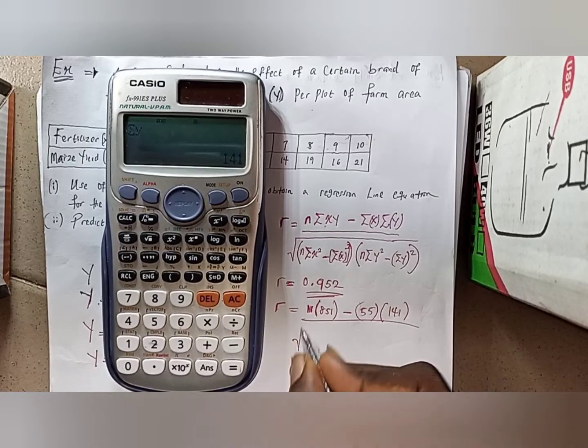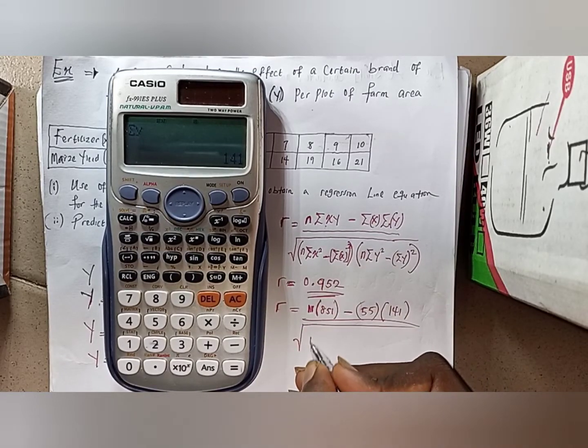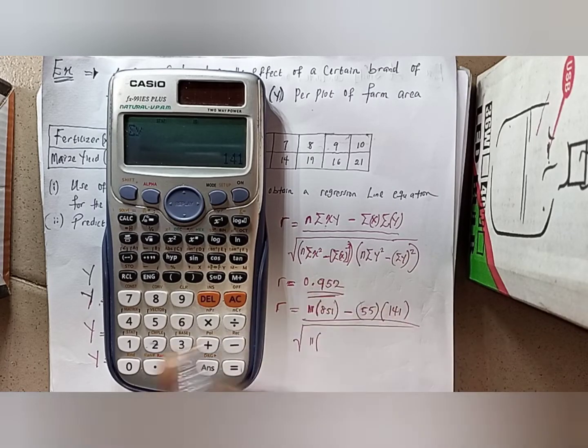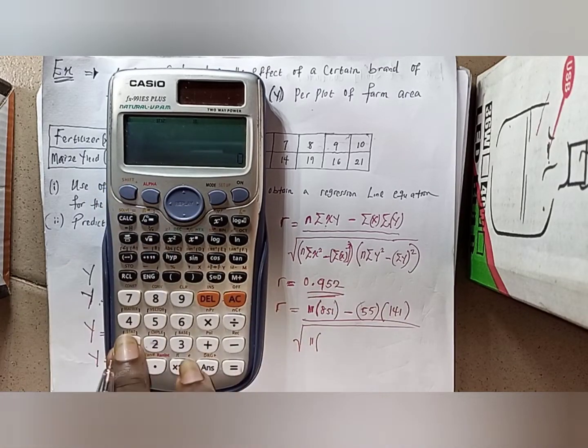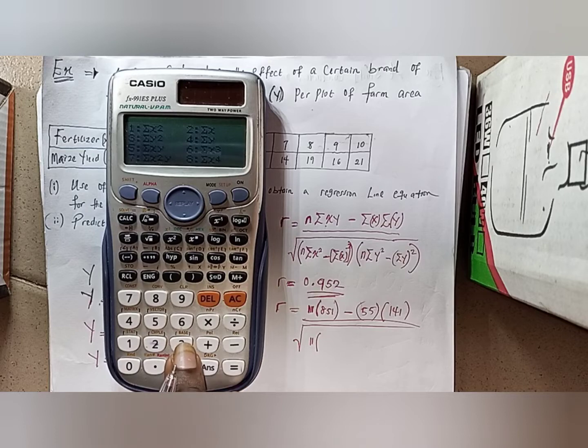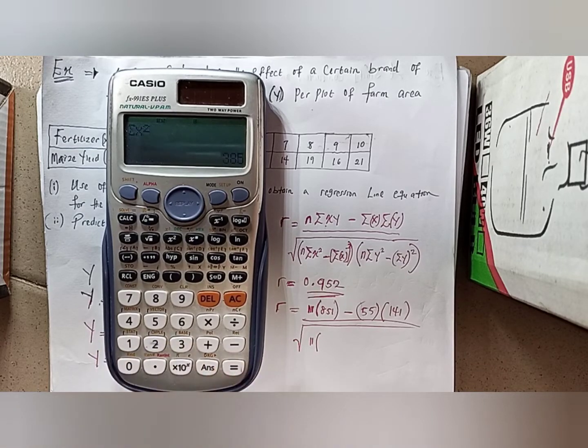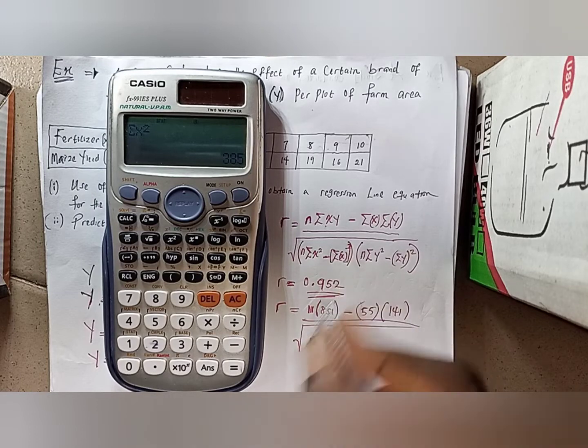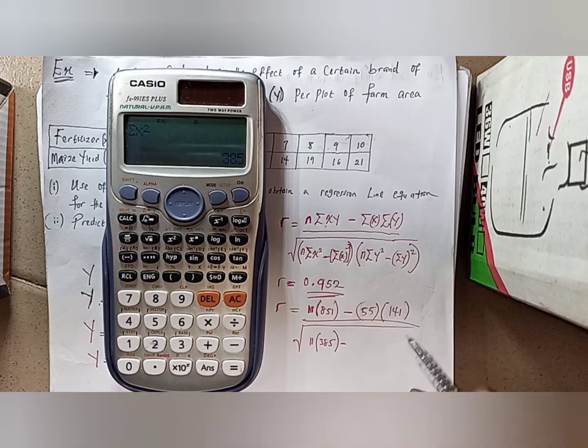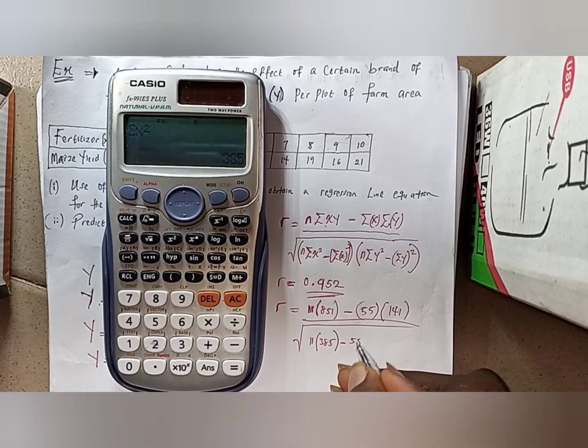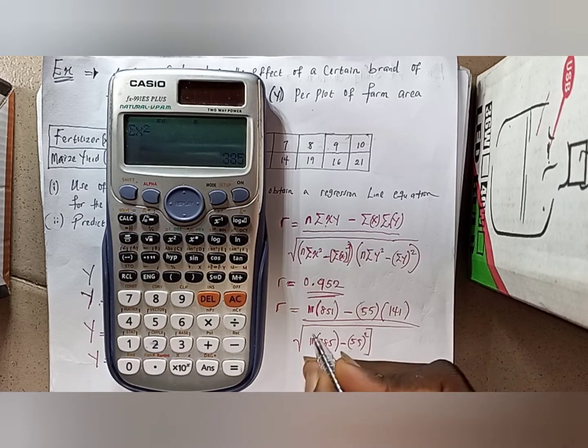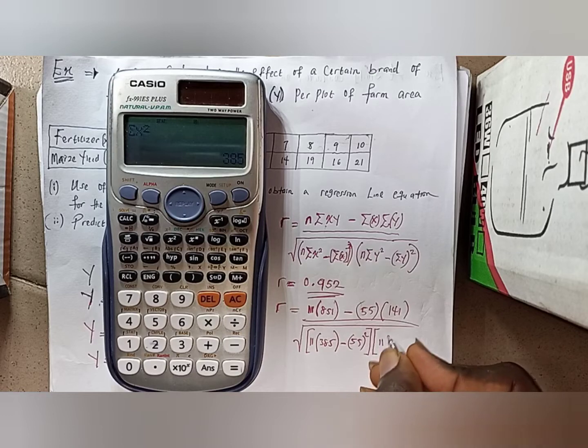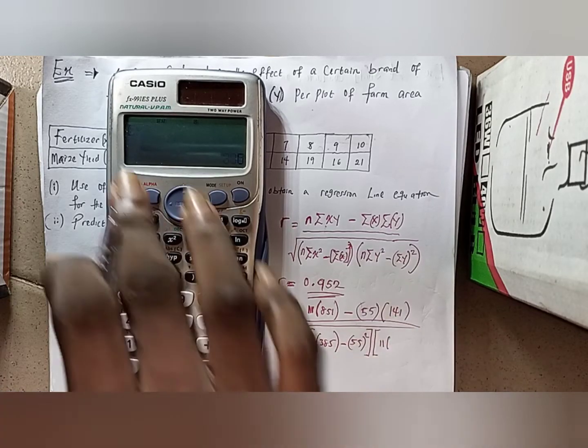All divided by the square root of, I have n to be 11, and then we have the summation of x squared here. Do the same thing, 3, x squared is on number 1. Equal to, now 385, minus the summation of x I have it before as 55, then you square the result. That's for the first bracket.